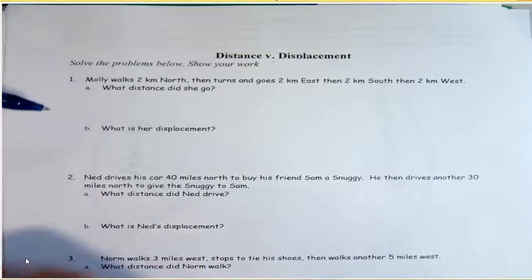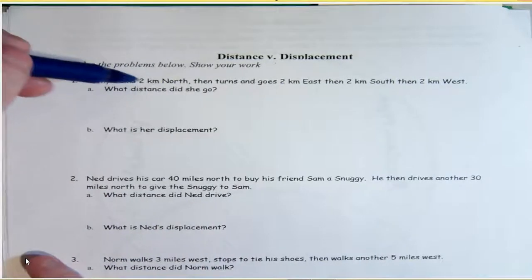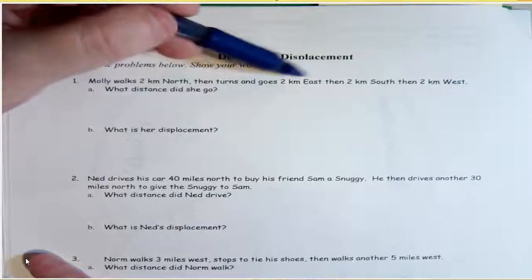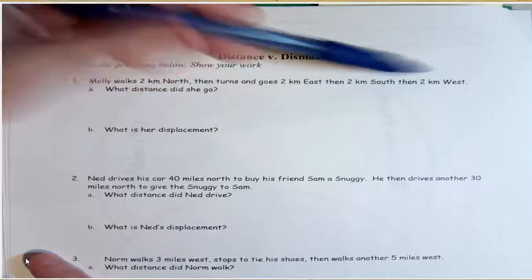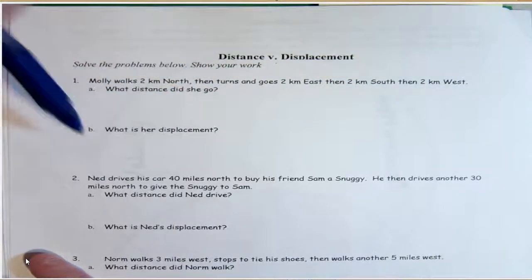We're going to do 1a and 1b. So Molly walks 2 kilometers north, then turns and goes 2 kilometers east, and then turns and goes 2 kilometers south, and then 2 kilometers west. What is the distance she went? What is their displacement?